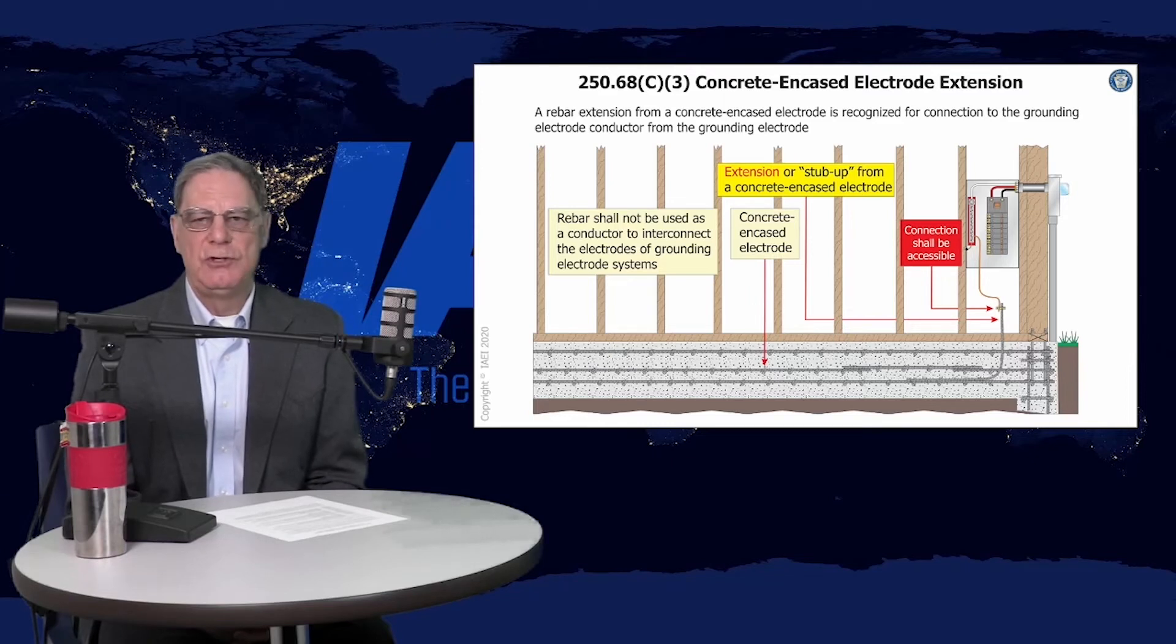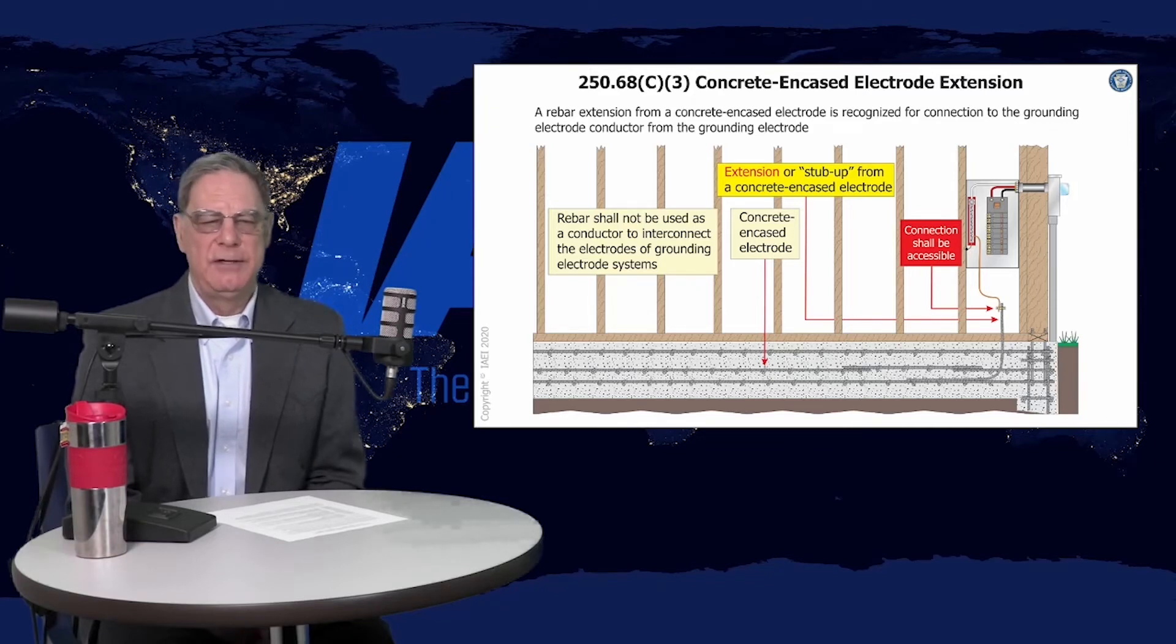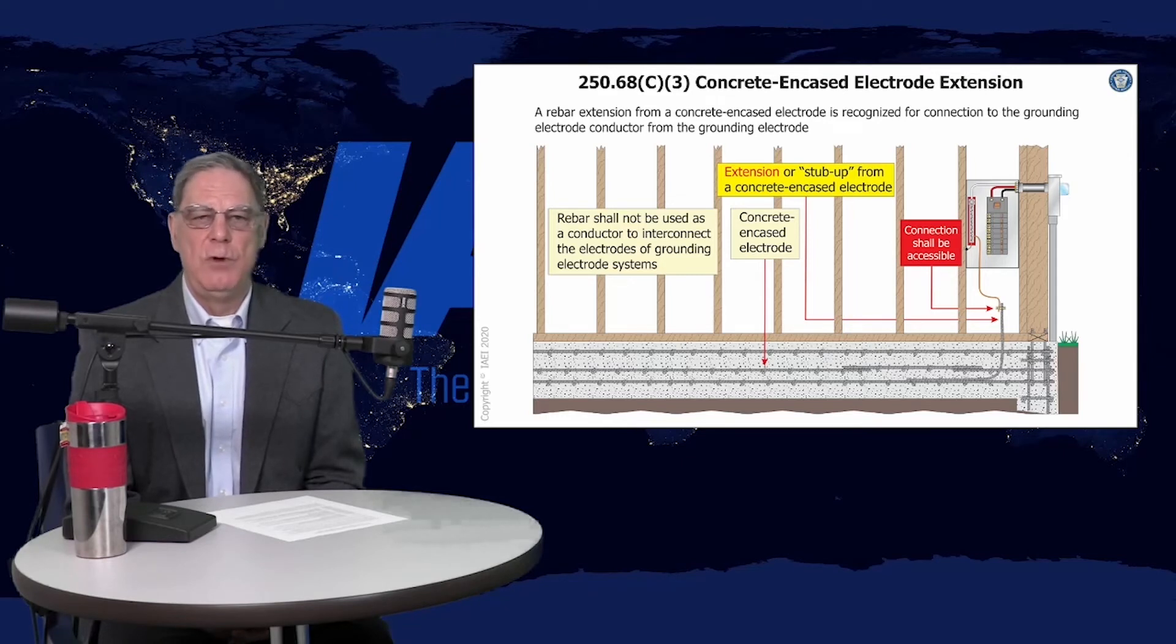One of the ways this can be made to work very easily, and it's done in many places, is to have a little piece of rebar stub up into a drywall area. This can be used to stub up, not out into the dirt out of the side of the foundation where it's going to just basically corrode away and actually cause a deterioration of the rebar in the footer, which is a structural issue.